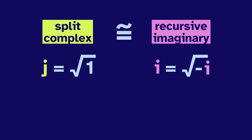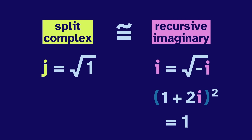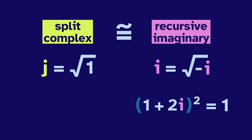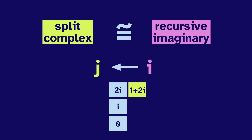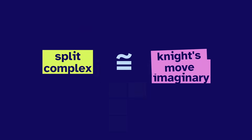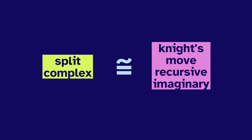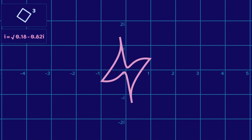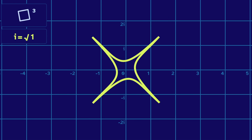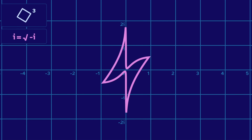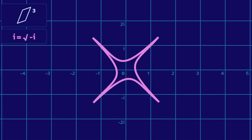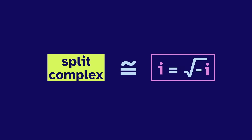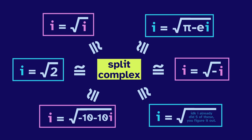To see why these systems are squ-equal, let's consider 1 plus 2i. If we square it, then do a little simplification, we end up with 1. This number squares to 1 — it acts the same as j. So we can convert i into j by going 2 vertically and 1 horizontally — that's a knight's move! The split-complex are squ-equal to the knight's move recursive imaginary numbers. We can morph from the recursive into the split-complex by changing the definition of i, or fix the recursive definition and apply a knight's move to the input and output. A bunch of other definitions are also squ-equal to the split-complex.